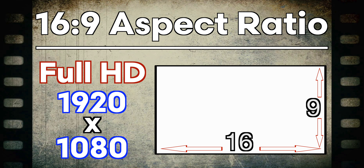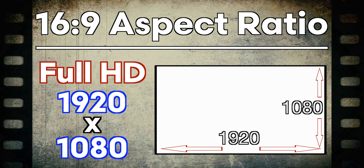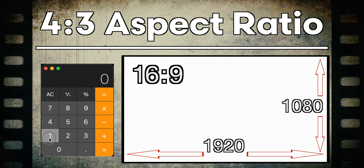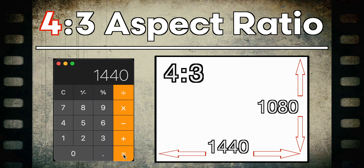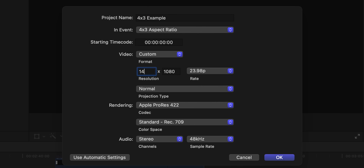If we're looking at full HD footage, the dimensions are 1920 by 1080. If you divide 1080 by 9 you get 120, then multiply that by 16 to get 1920 — confirming the 16x9 aspect ratio. For 4x3, divide the vertical pixels of 1080 by 3 to get 360, then multiply by 4 to get the horizontal dimension of 1440. So you'll end up with custom dimensions of 1440 by 1080 for a 4x3 aspect ratio.